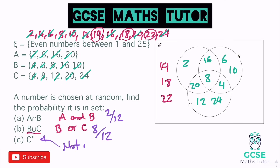Finally, C' — not in C. We can't have any of the 5 numbers in C. Numbers not in C are: 2, 16, 6, 10 (in A or B only) and the 3 numbers on the outside — that's 7 numbers out of 12.